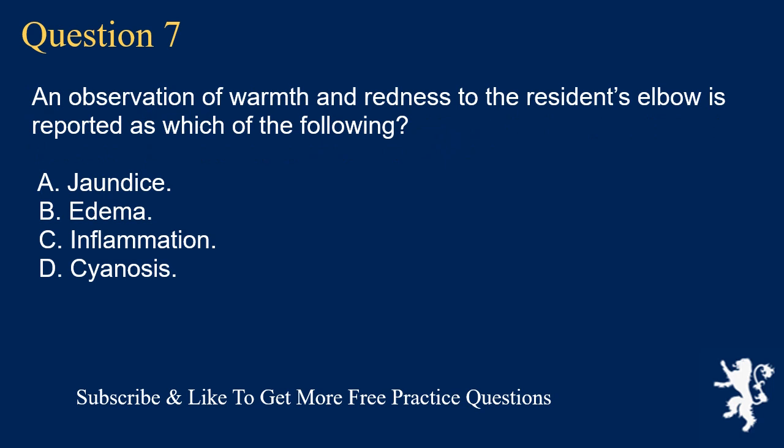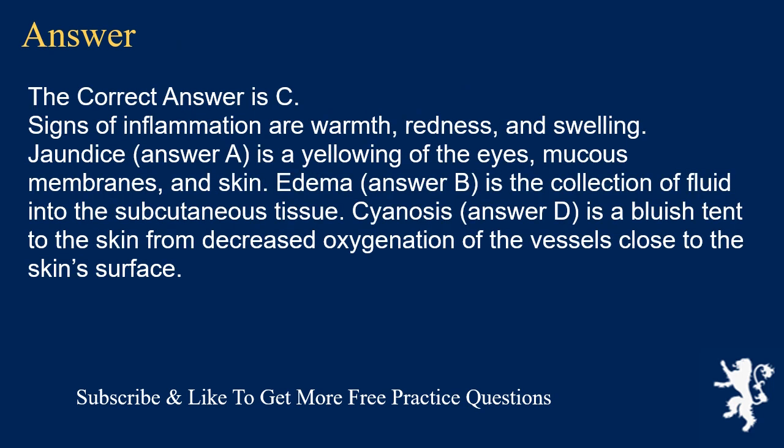Question 7. An observation of warmth and redness to the resident's elbow is reported as which of the following? A. Jaundice. B. Edema. C. Inflammation. D. Cyanosis. The correct answer is C. Signs of inflammation are warmth, redness, and swelling. Jaundice is a yellowing of the eyes, mucous membranes, and skin. Edema is the collection of fluid into the subcutaneous tissue. Cyanosis is a bluish tint to the skin from decreased oxygenation of the vessels close to the skin's surface.